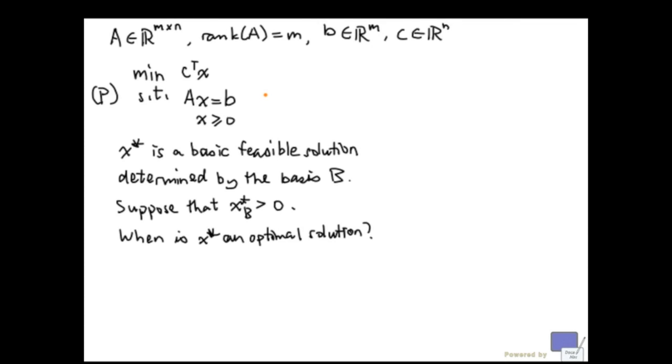Say we are given a linear programming problem in standard form. The problem data is as follows. A is an m by n matrix. The rank of A is m. That means A has full row rank. B is an m vector and C is an n vector.